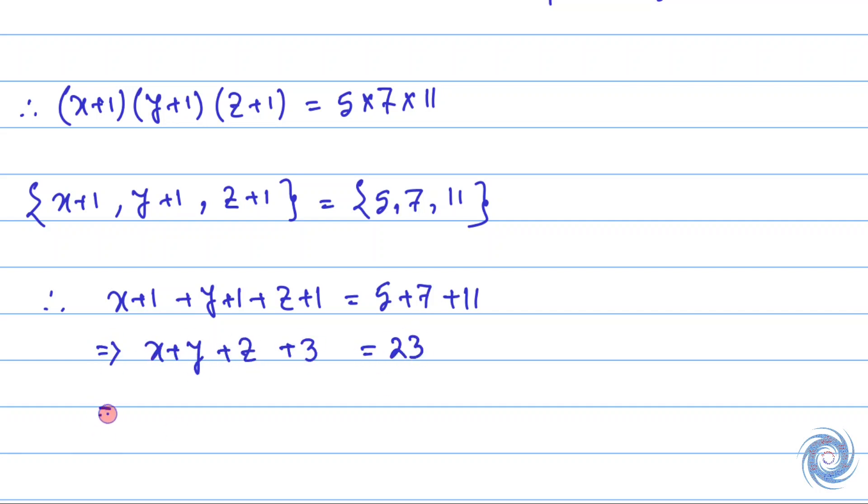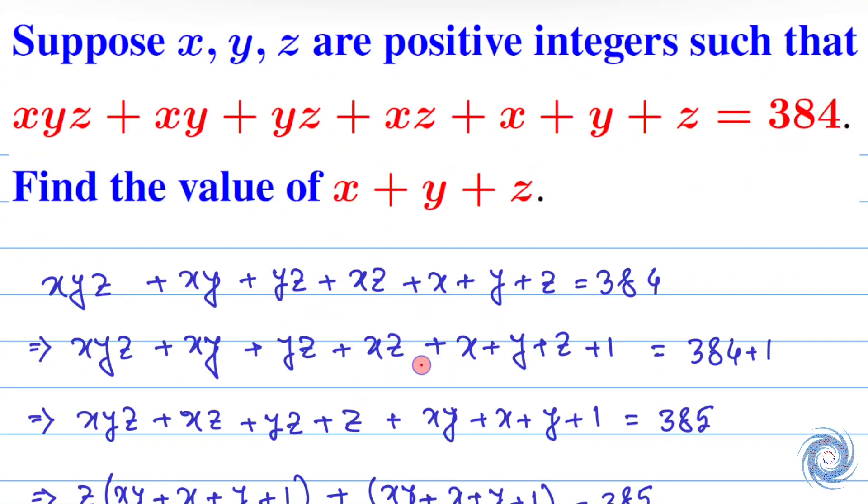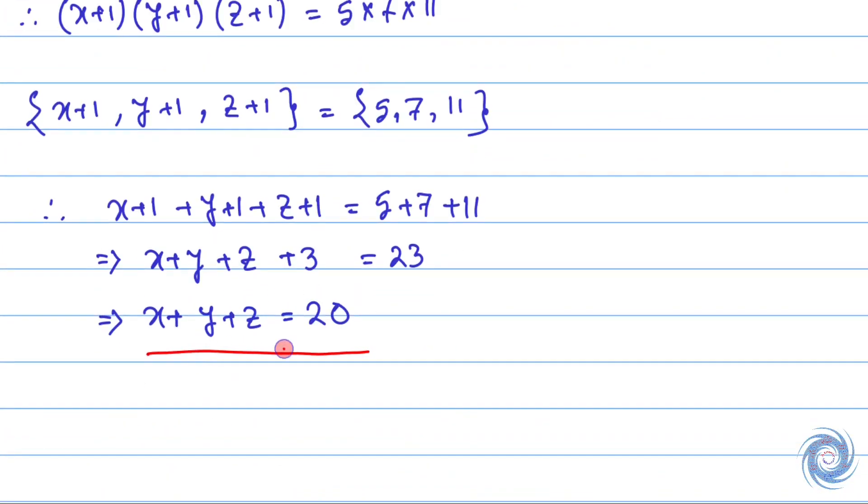And this implies... So finally we have x plus y plus z equals 20. And here we are supposed to find the value of x plus y plus z and here we get x plus y plus z equals 20. So we are done, thank you.